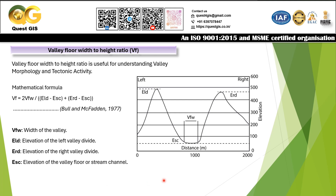To complement mountain front sinuosity, we also calculate the valley floor width-to-height ratio, called Vf. This ratio is useful for understanding valley morphology and tectonic activity. To calculate Vf, you make a cross-section across a valley and take several measurements: Vfw is the width of the valley at its base, along with the elevation of the left valley divide and the elevation of the right valley divide.